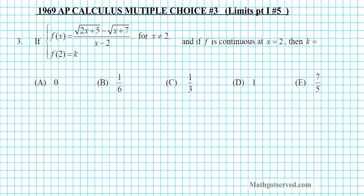The problem says: given this piecewise defined function, if and only if f is continuous at x equals two, then find x. Let's go ahead and review the definition of continuity at a point first, and then we'll apply it to this problem.